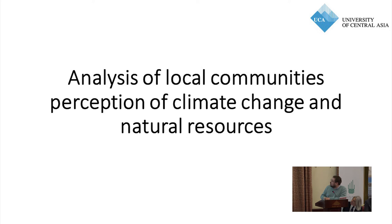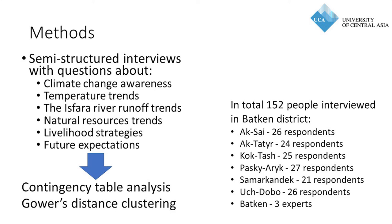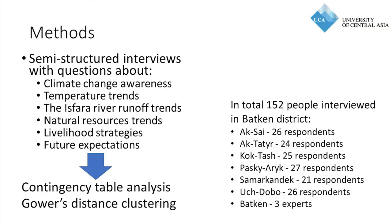The third part is analysis of local communities' perception of climate change and natural resources. We developed a semi-structured questionnaire and visited local communities to ask about their perceptions on natural resources and climate change — covering climate change awareness, what causes it, whether precipitation and temperature are increasing, and natural resource trends. We conducted contingency table analysis and hierarchical distance clustering using nominative data. In total, we questioned 152 people across all villages, plus three experts from the Batkan area.